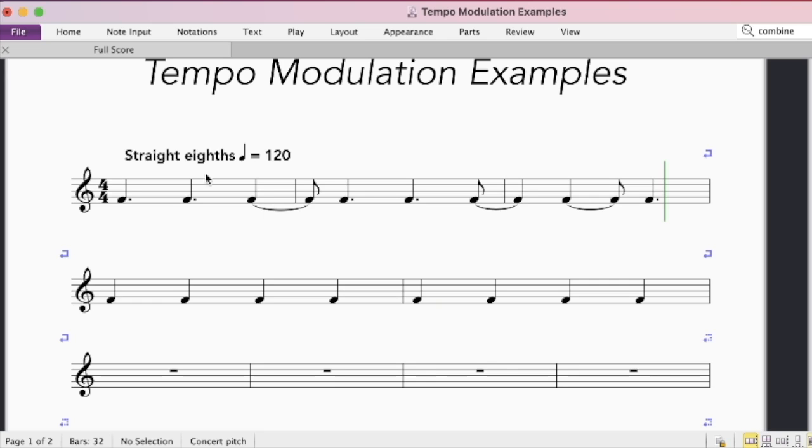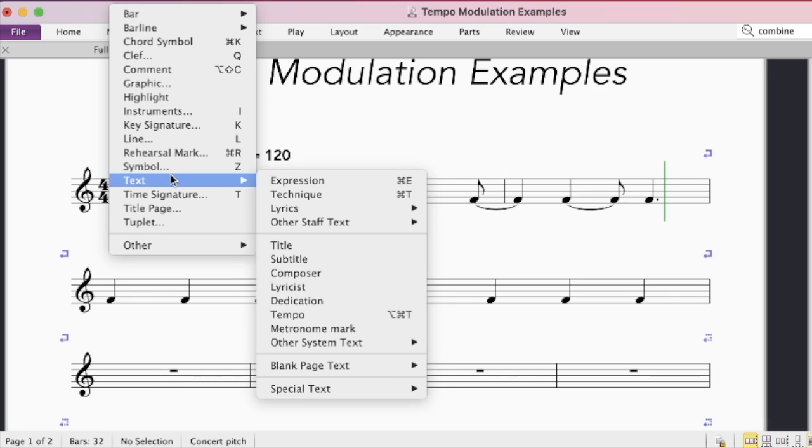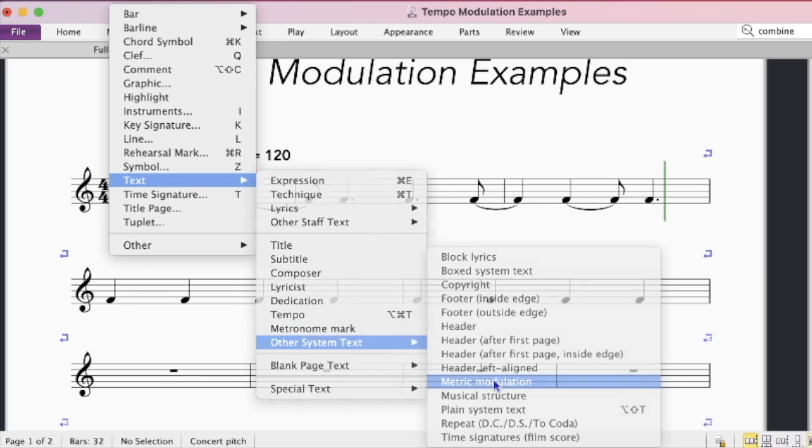Now there are a few ways to do this. If you've done the math, you'll probably know that the new quarter note value is 80 BPM. But in this case, because it's a really straightforward, rather common type of metric modulation or tempo modulation, there's actually some text built into Sibelius to help you with this. So if you right-click on the area that you want to change the tempo, you hover over the text menu, and then go down to other system text, and then select metric modulation.